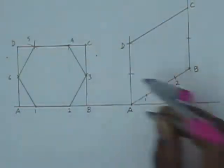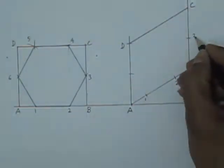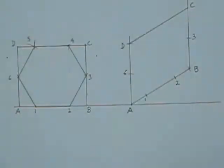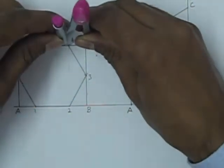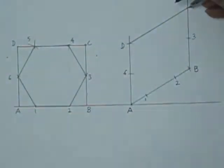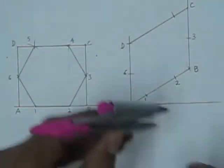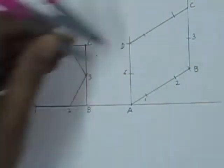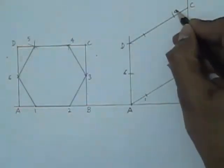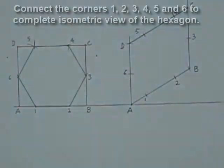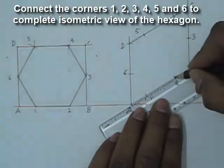Now these points show the locations of the corners of the hexagon. So we have located all the points, all the corners, one, two, three, four, five and six.